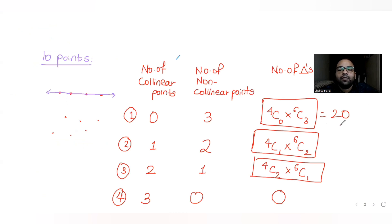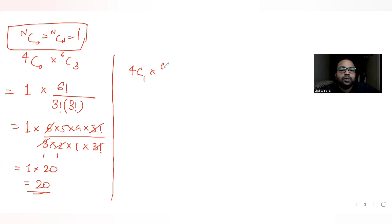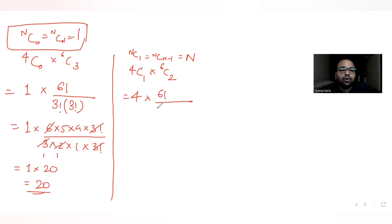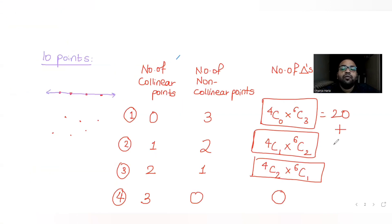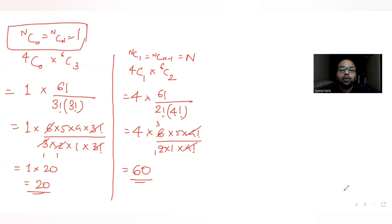Case 2: 4C1 × 6C2. We know 4C1 = 4. Then 6C2 = 6! / (2! × 4!) = (6 × 5 × 4!) / (2 × 1 × 4!) = 15. So 4C1 × 6C2 = 4 × 15 = 60. Case 2 gives 60 triangles.